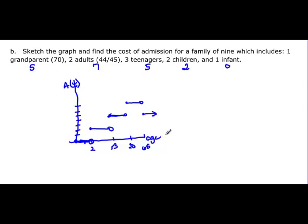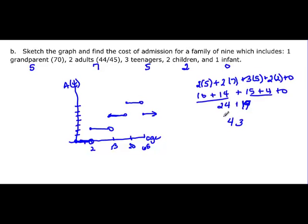Now to figure out what we have to evaluate, we have 2 times 5 plus we have 2 adults which is 2 times 7 plus 3 teenagers which is 3 times 5 plus 2 children which is 2 times 2 and then the one infant is 0. So $43 for that family to get in.